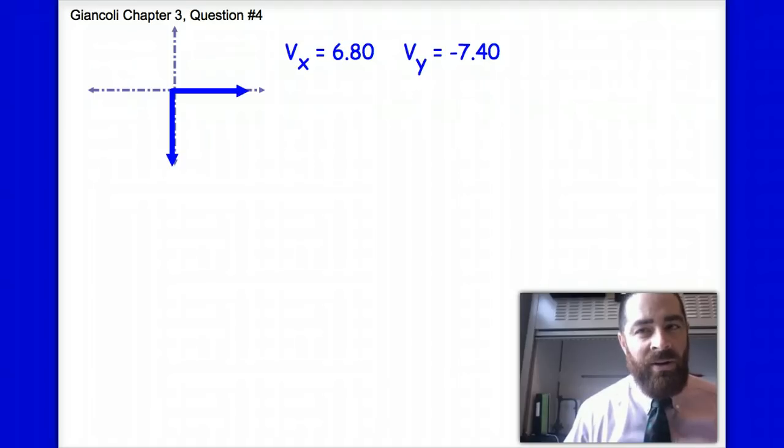Therefore, since I've drawn that, I can now expect my actual vector, which I'll draw here in orange, to look something like this. It's clearly going to be in the fourth quadrant.